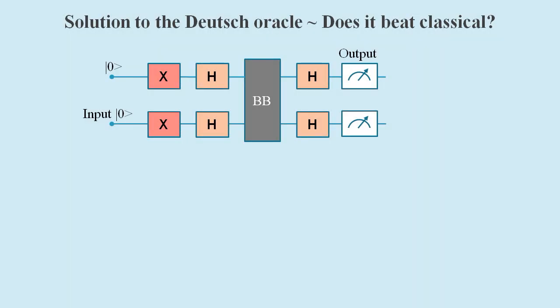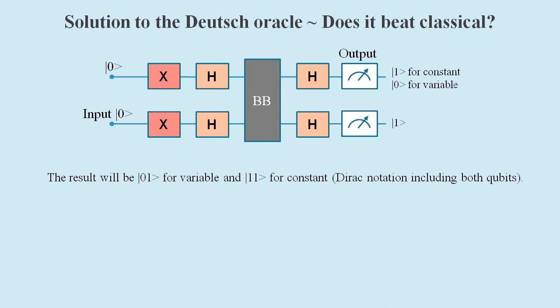By applying some NOT gates and some Hadamard gates, we can produce a circuit whereby the output qubit will be one if the black box contains a constant function and zero if it contains a variable function.